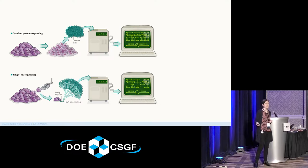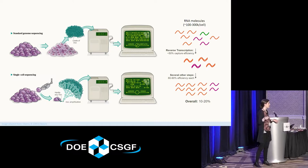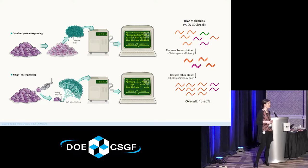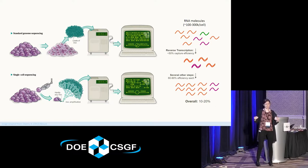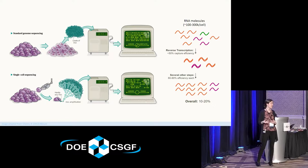Each step of the process, you lose some amount of material. For example, reverse transcription, one of the earliest steps, has roughly a 50% efficiency rate of capturing molecules — any molecule that's not reverse-transcribed, you won't see in your end results. The entire process has many steps, and the end efficiency ranges somewhere from 10% to 20%. So you can imagine you need a lot of material in order to have a good likelihood of detecting something, and this has some pretty serious effects on the data we get out and the analysis steps we have to take to adjust for it.